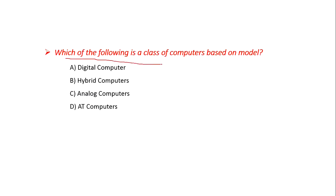Which of the following is a class of computers based on model? Option A: Digital Computer, B: Hybrid, C: Analog, D: AT Computer. Friends, Digital, Hybrid, and Analog are classifications based on application. So the answer is D: AT Computers.